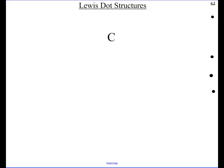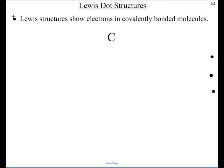Welcome to podcast 6.2. Today we're going to look at Lewis dot structures. What Lewis dot structures do is they show electrons in covalently bonded molecules. We've looked at what a covalent bond is, and now we're going to look at the model for how to make molecules. This is going to help us a lot in the future when figuring out properties of certain molecules, and it's a pretty straightforward one.